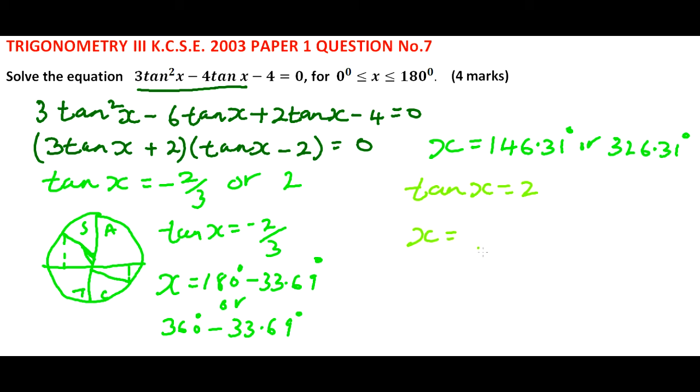Since tan is positive in the first quadrant, this will be 63.43°.